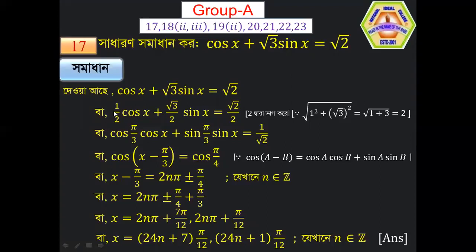We divide both sides by 2: (1/2)cos x + (√3/2)sin x = √2/2. Now, 1/2 = cos(π/3) and √3/2 = sin(π/3), so this becomes cos(π/3)cos x + sin(π/3)sin x = 1/√2. Using the identity cos(a − b) = cos a cos b + sin a sin b.